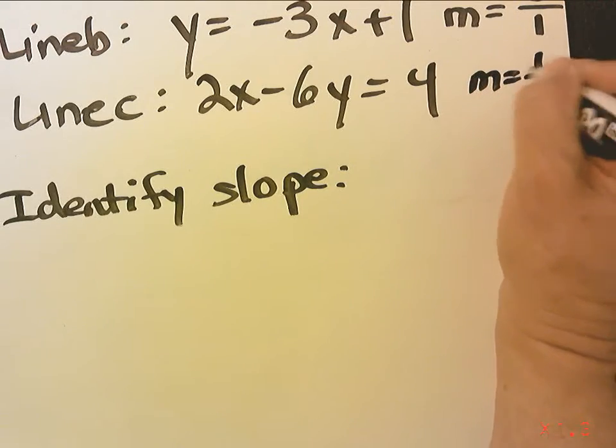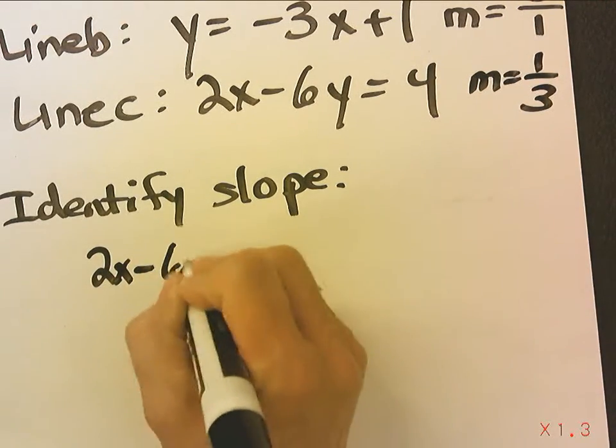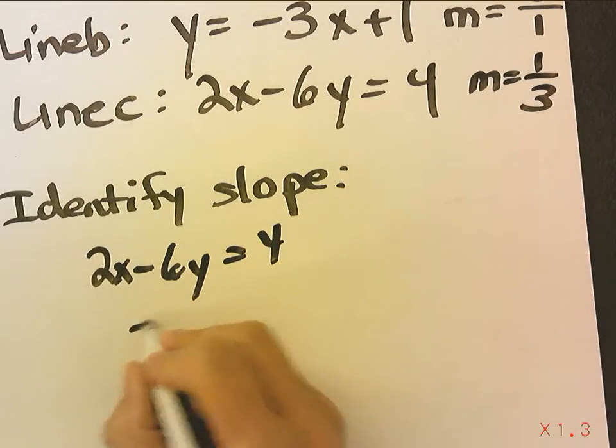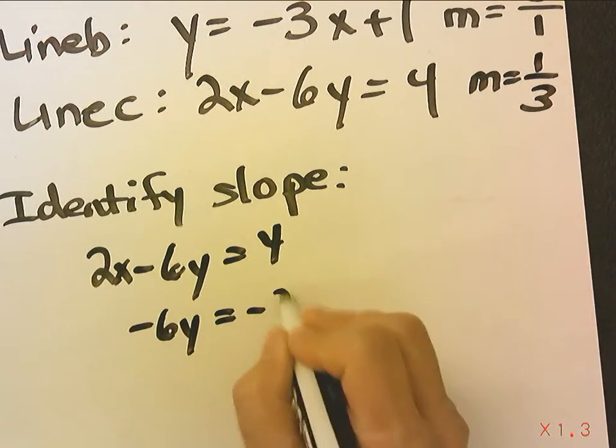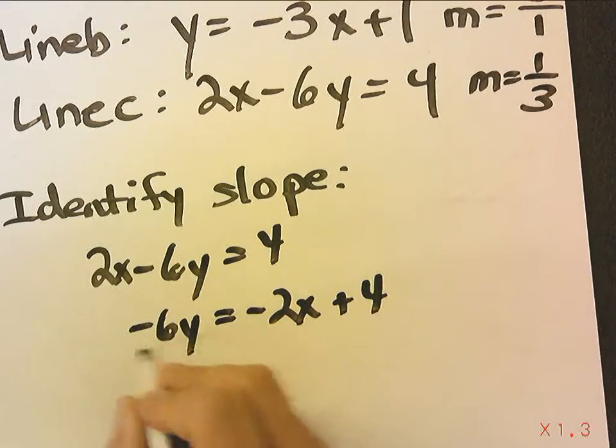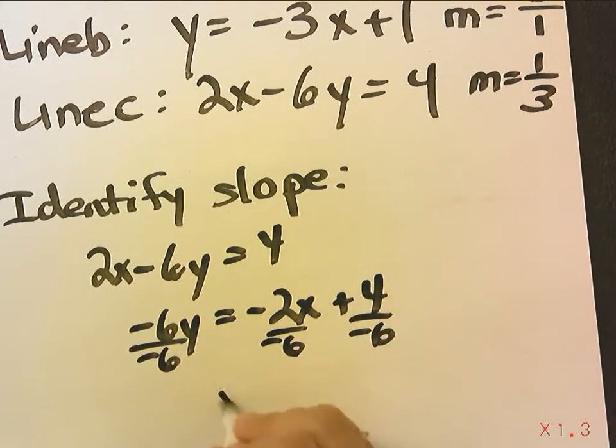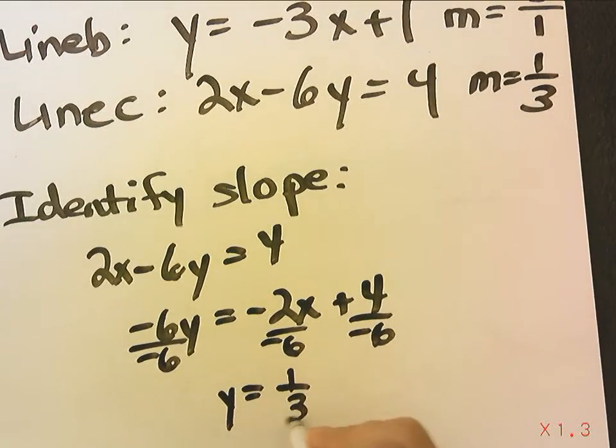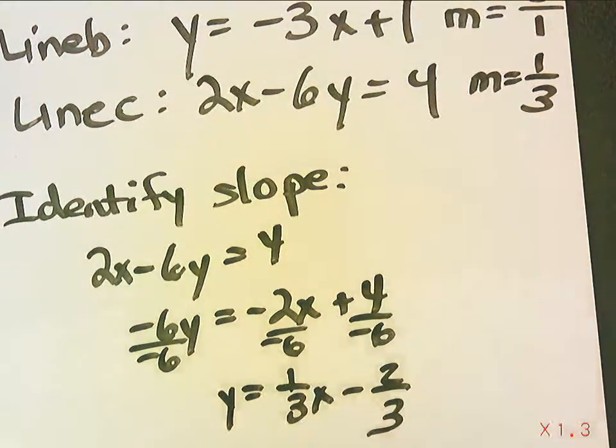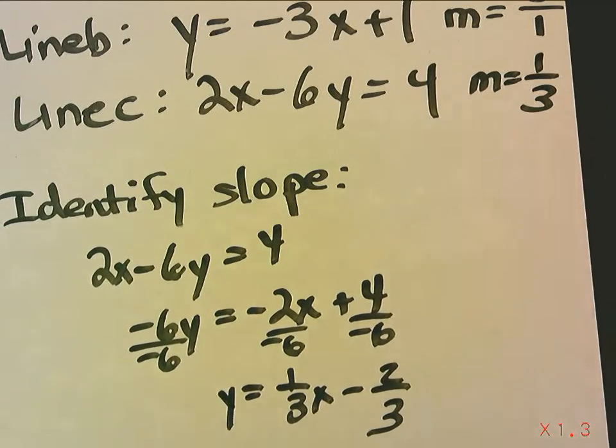But then, I'm also going to identify the slope by changing it into slope-intercept form, by subtracting 2x from both sides and dividing both sides by negative 6. So y equals 1 third x minus 2 thirds. So not surprisingly, we get the same slope.